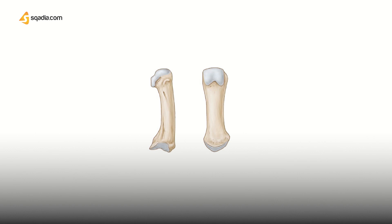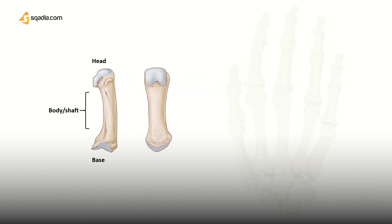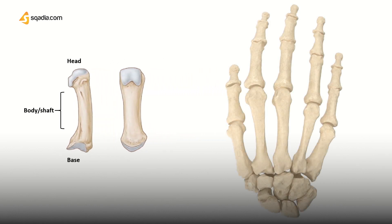Looking individually at a metacarpal bone, it consists of a body or shaft and two extremities: the head and the base. The head is located at the distal end, near the fingers, and the base is directed at the proximal or carpal end, facing the wrist joint. The medial and lateral surfaces of the metacarpal bones are concave, providing attachment sites for the interosseous muscles.